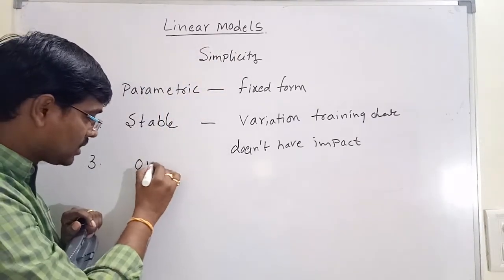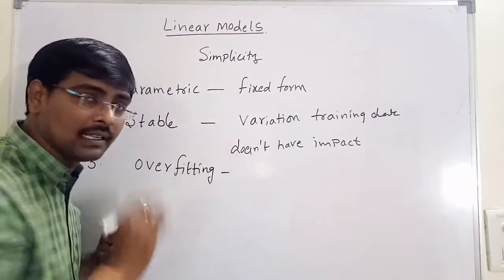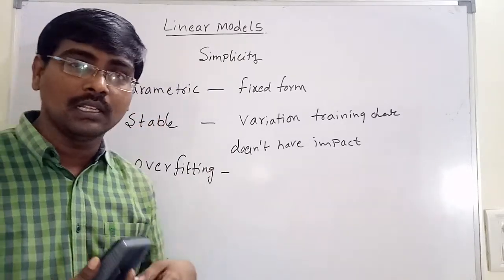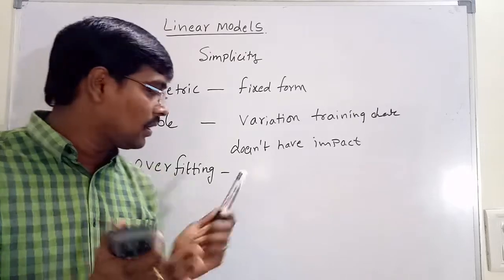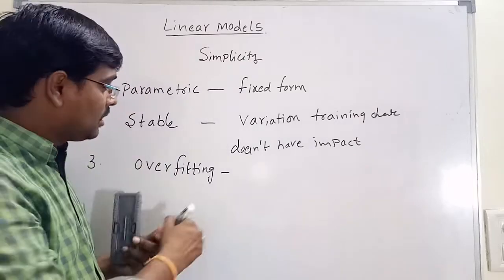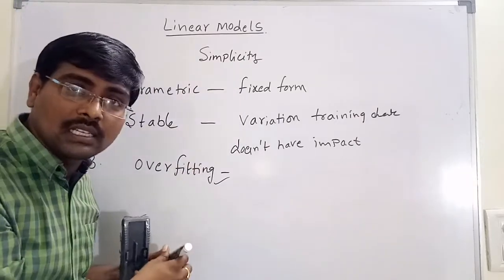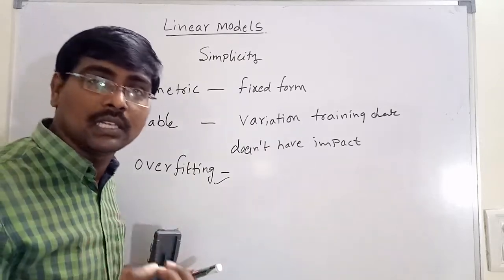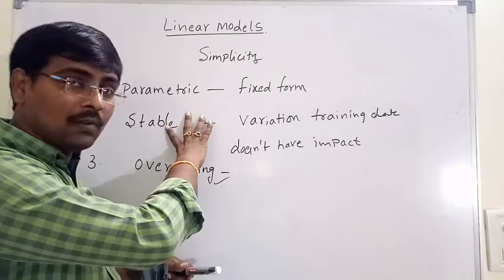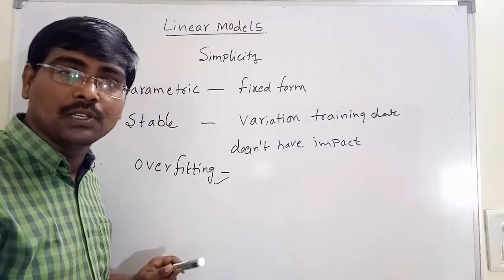Linear models are less susceptible to overfitting on the training examples. There is a less chance of overfitting occurring in the given training examples. However, even with this simplicity, in linear models there is a chance for the occurrence of underfitting. Based on these three points, we can say that linear models are very simple learning models in machine learning.